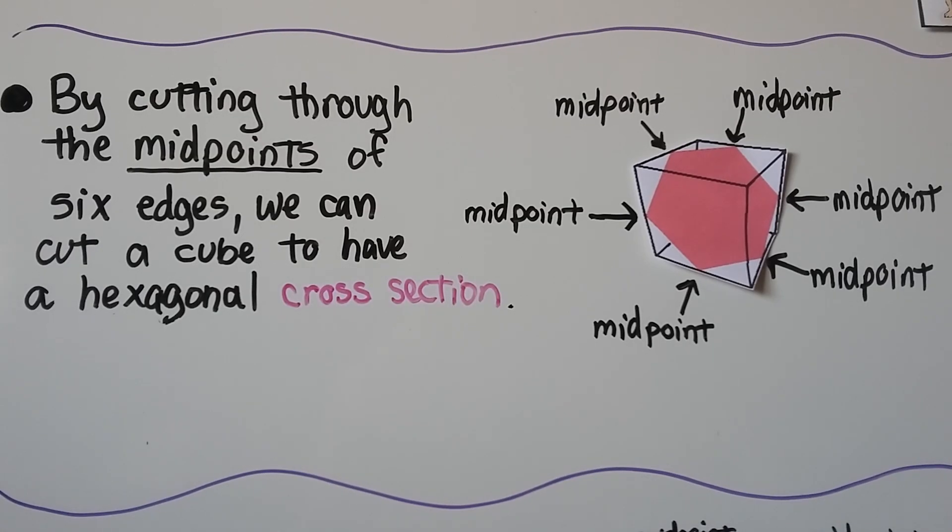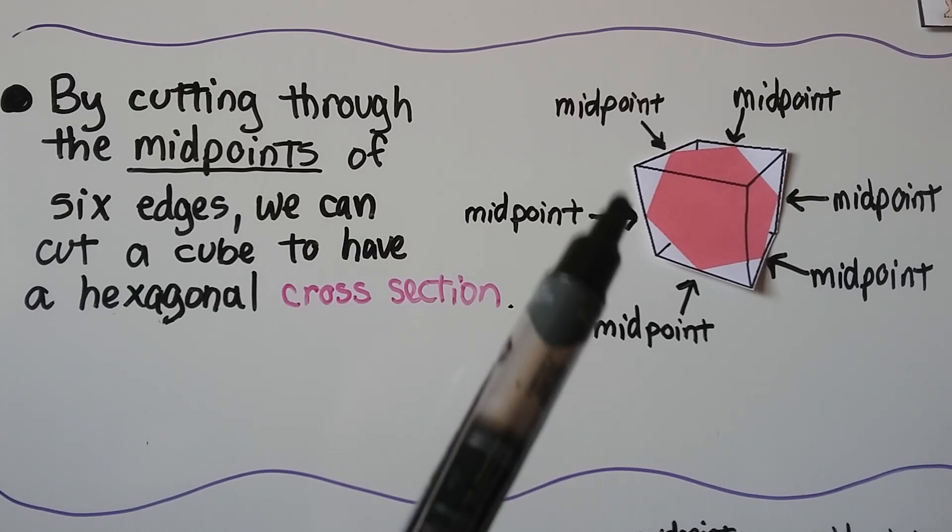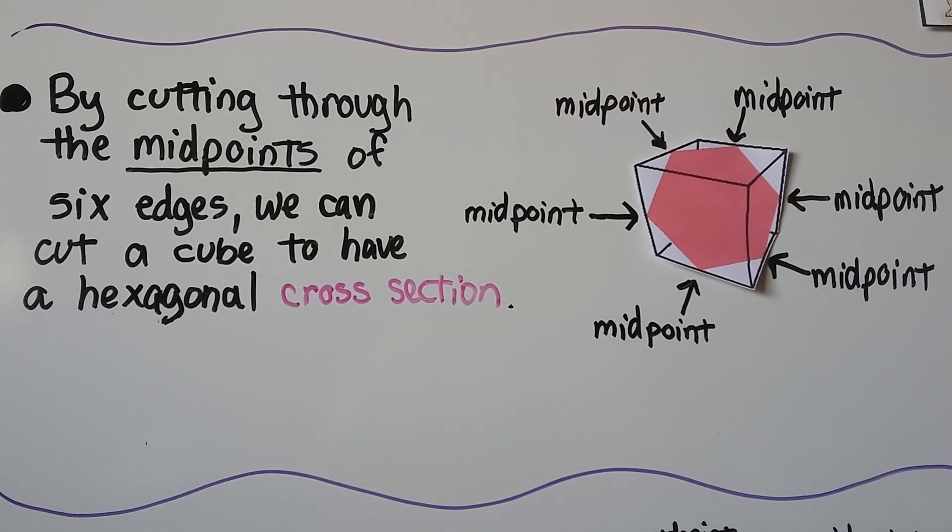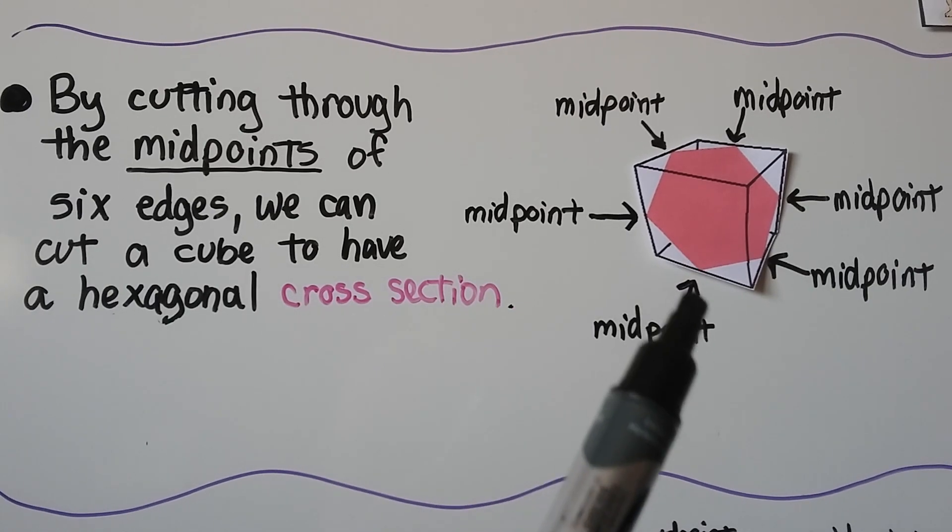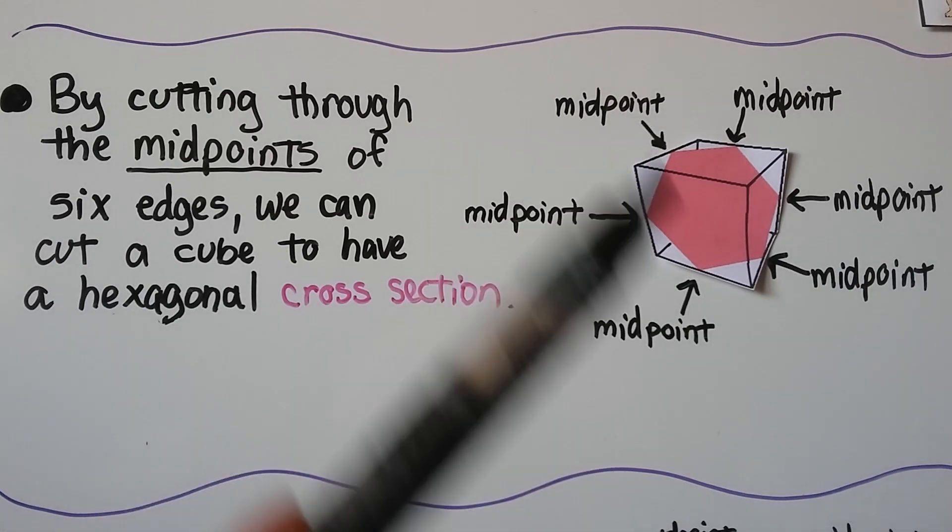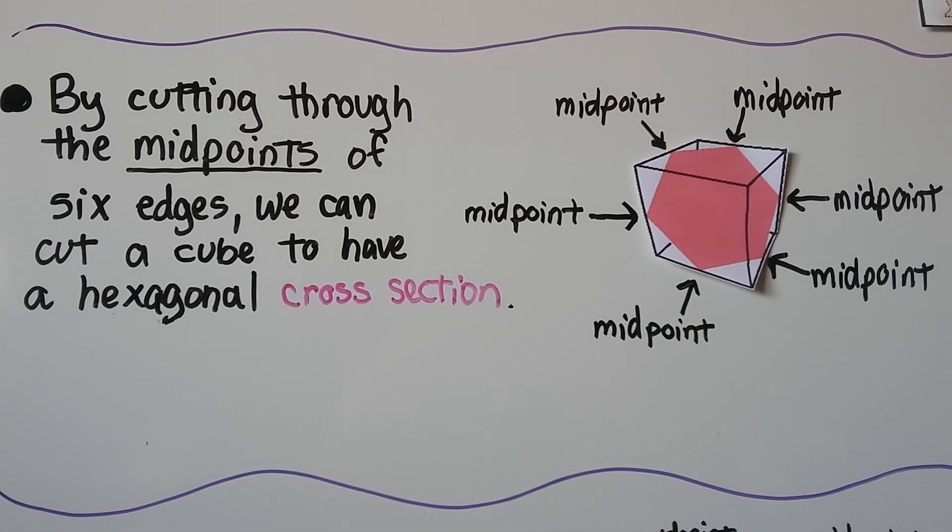By cutting through the midpoints of the six edges, we can cut a cube to have a hexagonal cross section. These are all the midpoints of these edges. And if we slice it that way on those six edges at the midpoints, we'll get a hexagonal cross section.